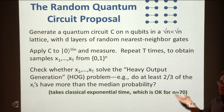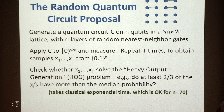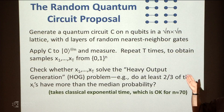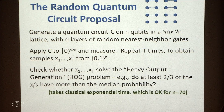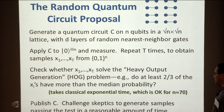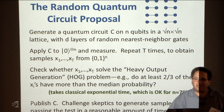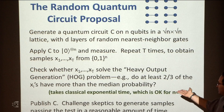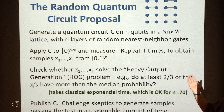We do not know a polynomial-time classical algorithm to verify the results for these types of experiments. In principle there are ways once you've built a more powerful quantum computer with fault tolerance and so forth. But it is a fantastic open problem how you do that in the NISQ era. You publish your circuit, challenge skeptics to generate samples passing your test in a reasonable amount of time. As complexity theorists, we'd like to say something more rigorous than 'seems hard to me.'